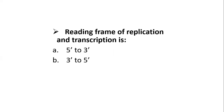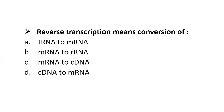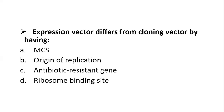The reading frame of replication and transcription is 5 to 3 prime or 3 to 5 prime. The correct answer is 3 to 5 prime. Reverse transcription means conversion of: transfer RNA to messenger RNA, messenger RNA to ribosomal RNA, messenger RNA to complementary DNA, or complementary DNA to messenger RNA. The correct option is C — messenger RNA to cDNA conversion is called reverse transcription. Expression vector differs from cloning vector by having: multiple cloning site, origin of replication, antibiotic resistant gene, or ribosome binding site. The correct option is D — ribosome binding site is only present in expression vectors.